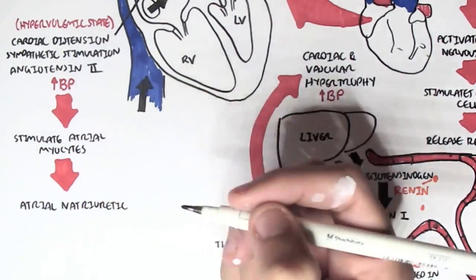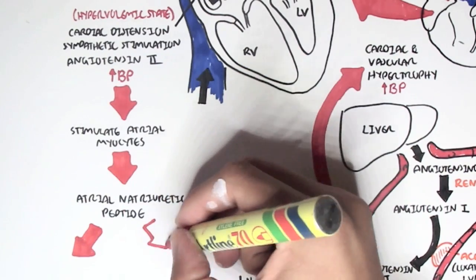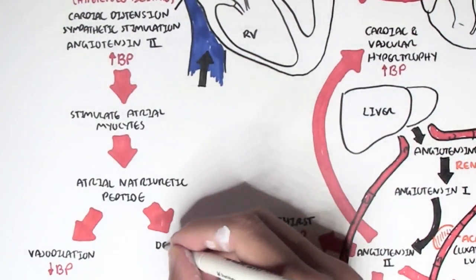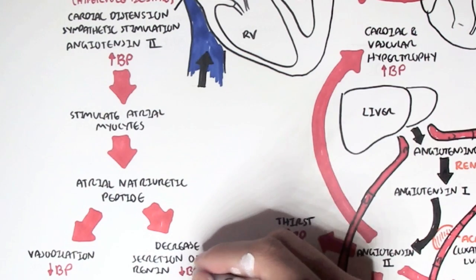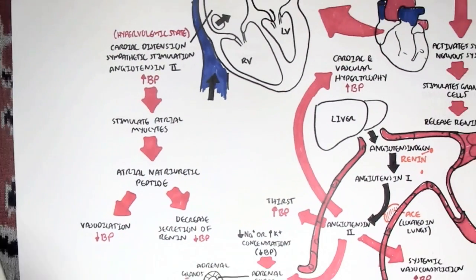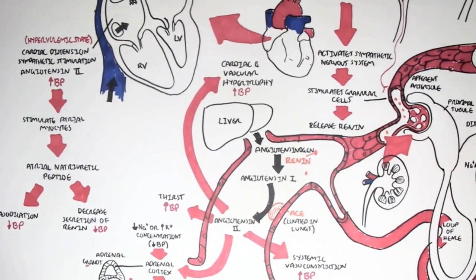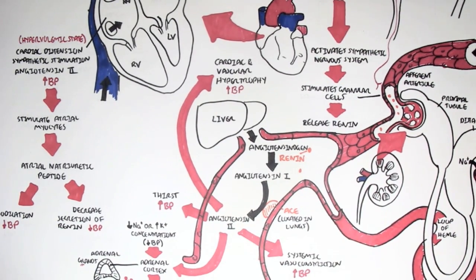Atrial natriuretic peptide is a hormone that causes vasodilation, which decreases blood pressure. It also inhibits the release of renin and therefore the production of angiotensin II. Thus, atrial natriuretic peptide is an inhibitor of the renin-angiotensin-aldosterone system, although it is very weak compared to the other hormones that increase blood pressure.